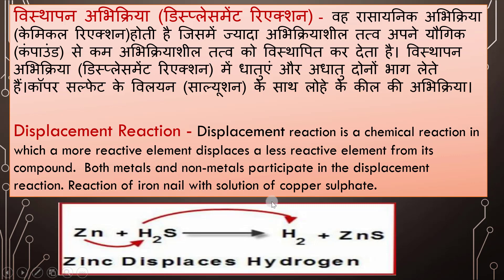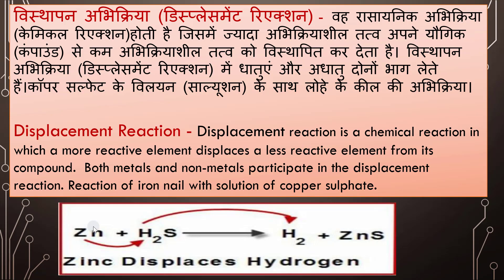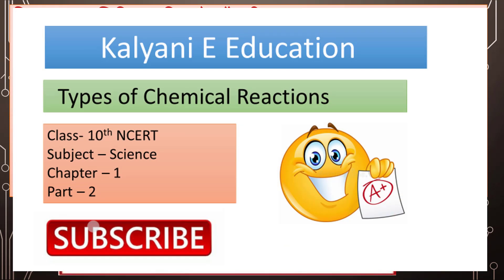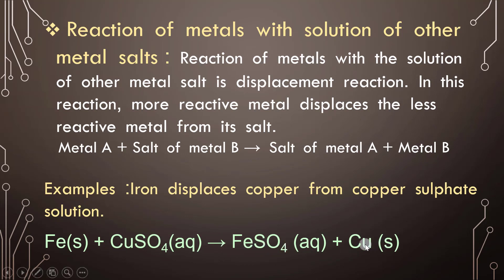An example is the reaction of iron with a solution of copper sulfate. In this reaction, more reactive metals displace less reactive metals from their salts. The general form is: Metal A + Salt of Metal B → Salt of Metal A + Metal B. Iron displaces copper from copper sulfate solution because iron is more reactive than copper, giving iron sulfate and copper.